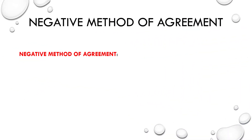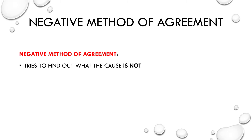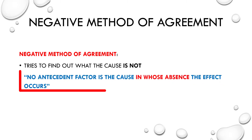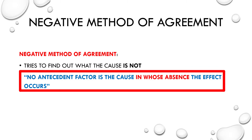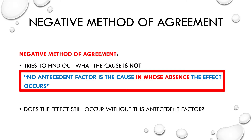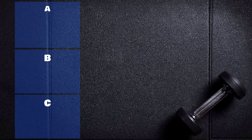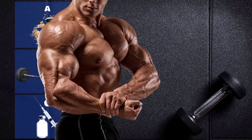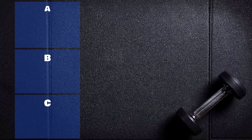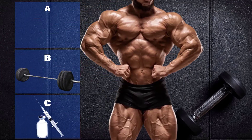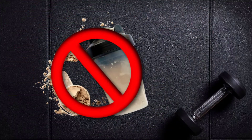The negative method of agreement tries to find out what the cause is not. The principle stated: no antecedent factor is the cause in whose absence the effect occurs. If the effect still occurs without a given antecedent factor, that factor is certainly not the cause. For example: instance one has A, B, C and an effect; instance two has A, B, C and an effect; instance three has only B and C, but still has the effect. Since the effect occurs in the absence of A, A can be eliminated as a causal factor.